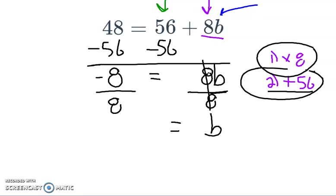And negative 8 divided by 8 is negative 1. So as you may have suspected, B equals negative 1 is the answer.